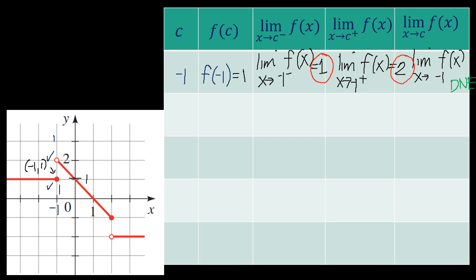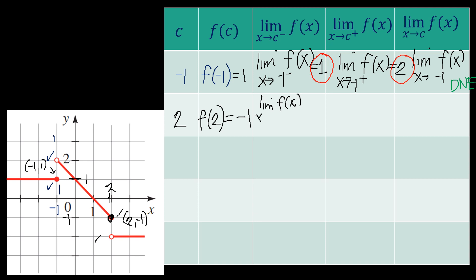Let's have another number — positive 2. So what is f of positive 2? Nakikita natin na ang symbol here it is excluded, pero ang symbol dito included ang 2. So the coordinates are 2 and negative 1 — we have f of 2 is negative 1. What is the limit of f of x as x approaches 2 from its left? Pansinin natin ang left — saan papunta ang y? To what value does y get closer and closer? The value is negative 1. Therefore, the answer is negative 1.